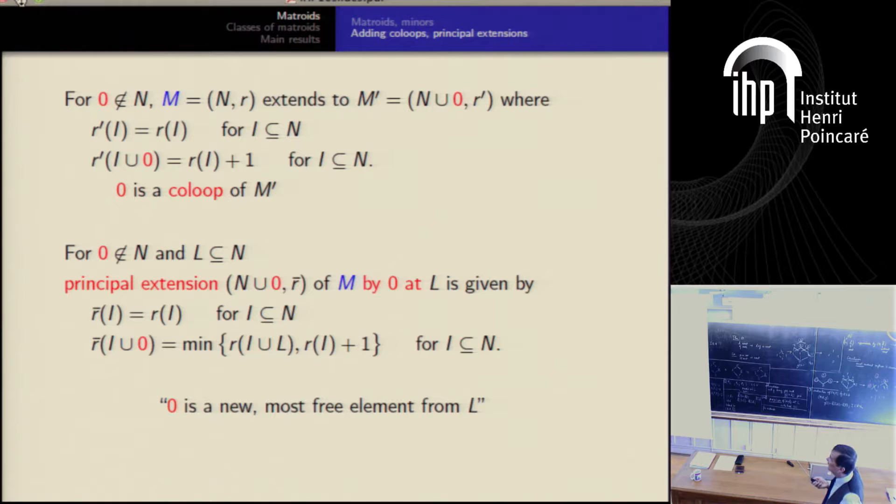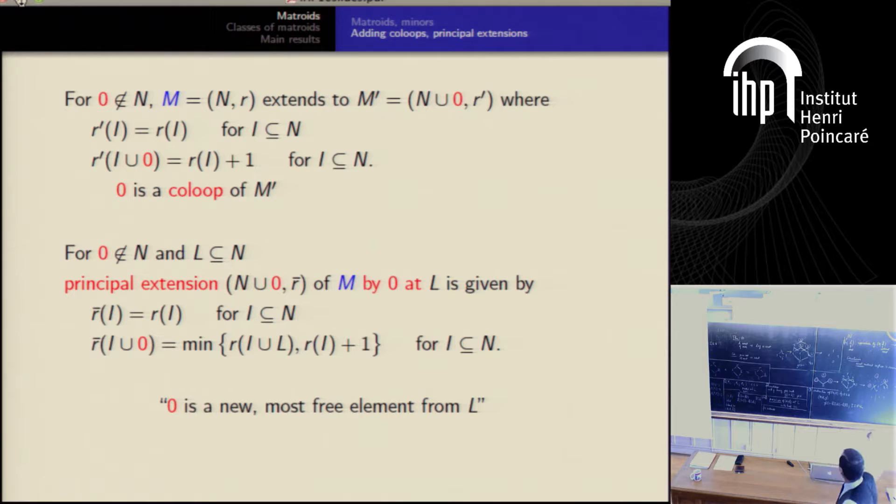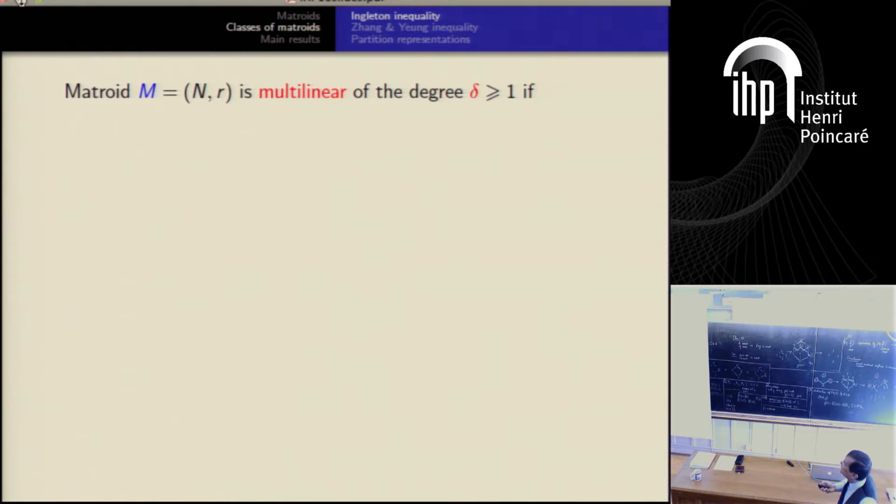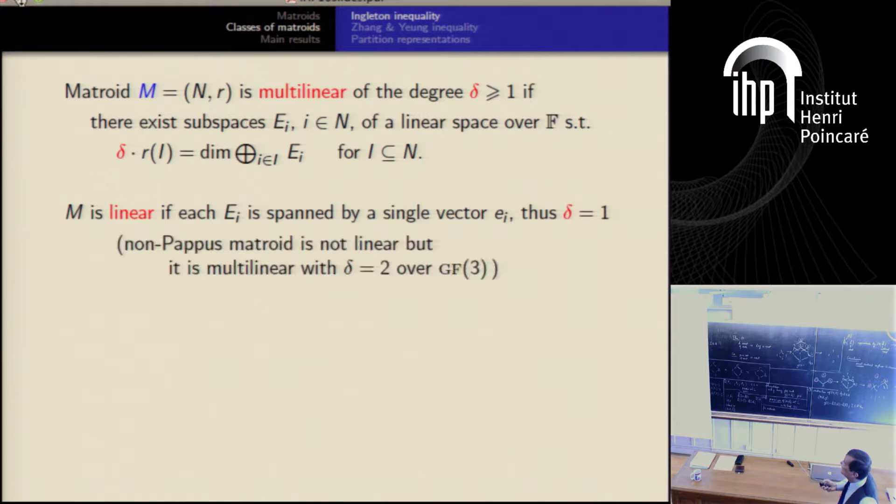And it's kind of new, most free element in principal extension at L. It's probably the same as what I wrote on the blackboard. I extend set n by 0, which is outside, and L is a subset of n. And this is done only for matroids. It's possible for polymatroids. And this minimum is the convolution. I didn't say that this convolution on the slide. This is convolution to get the final value one, as I explained on the examples. It's convolution, yes.